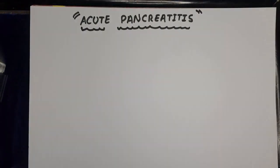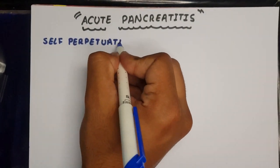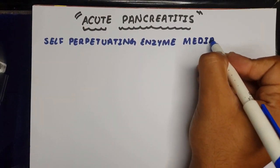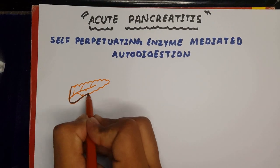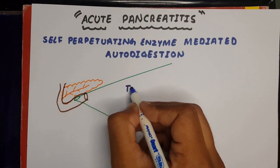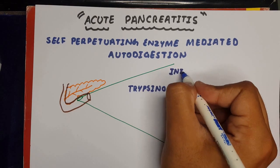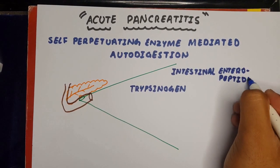Acute pancreatitis is a self-perpetuating, enzyme-mediated autodigestion of the pancreas, which is a consequence of premature intracellular trypsinogen activation, which causes the release of proteases that digest the pancreas and the surrounding tissue.